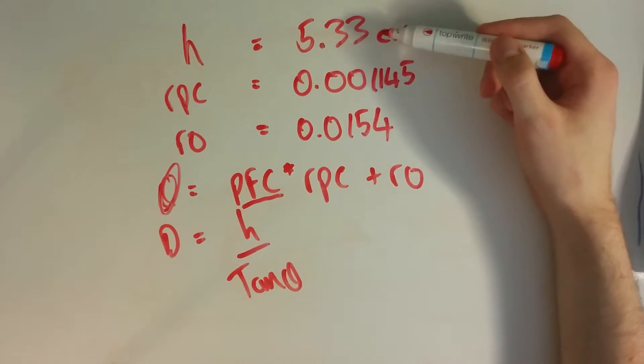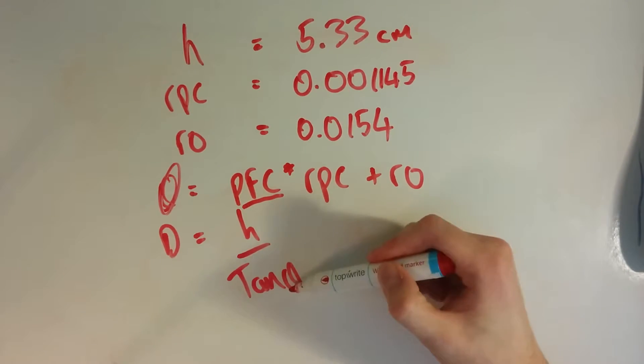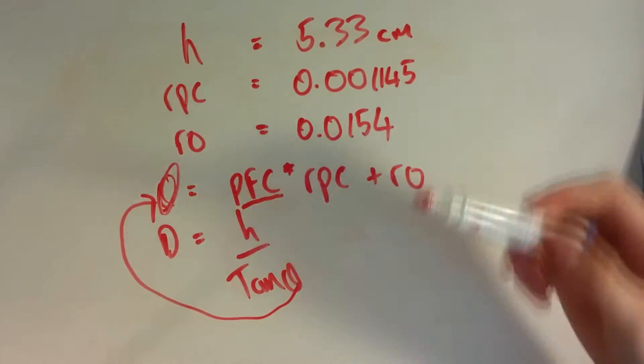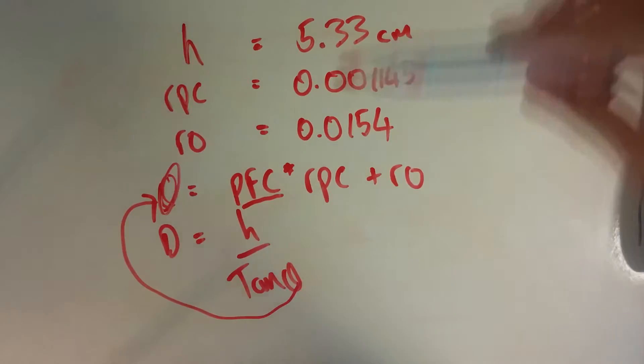We have h again as a constant distance between your webcam and your laser, and you go tan of theta, which we just get from this equation. So you can work out the distance of whatever the laser pointer is hitting based on these equations.